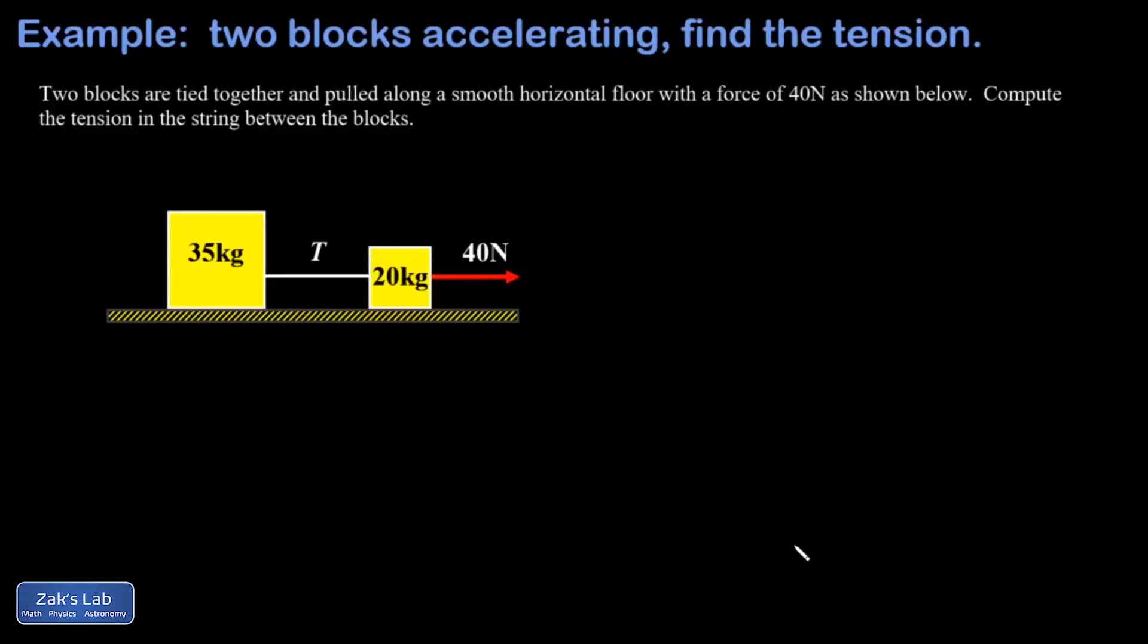In this problem we have two blocks that are tied together and then they're pulled along this horizontal frictionless surface with an external force of 40 newtons. The key to a problem like this is to view the blocks as one single mass.